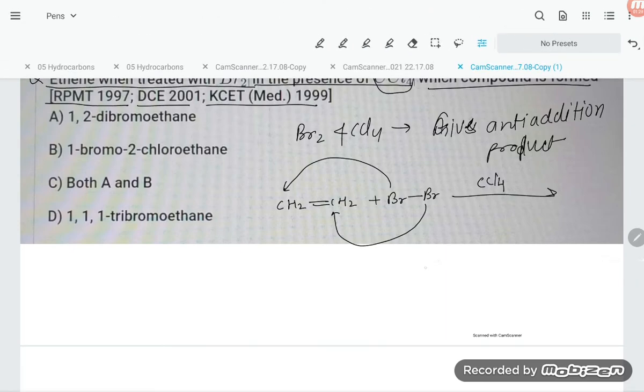So what product are you supposed to get? The product will be CH₂ and here again CH₂, with bromine added on one side and another on this side. So we get 1,2-dibromoethane. This is our required product: 1,2-dibromoethane.